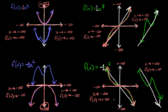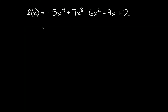Hopefully this made sense. Now we're just going to go over a few examples to tie everything together. Here's our first example: f(x) = -5x⁴ + 7x³ - 6x² + 9x + 2. We have a bunch of terms with a bunch of exponents, but the main thing to remember is the biggest exponent wins — that one rules everything else. In this case, that would be the 4. So the term that rules this entire polynomial is -5x⁴. This is all we have to pay attention to.